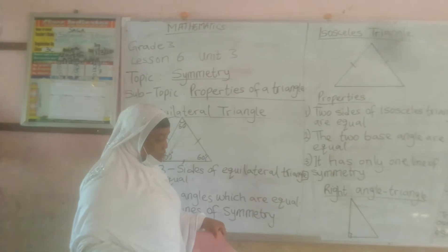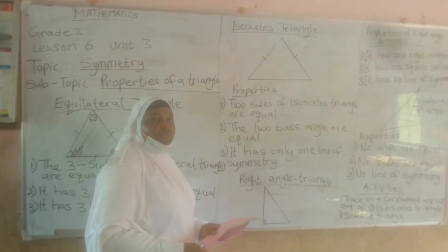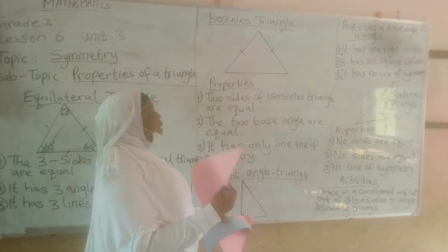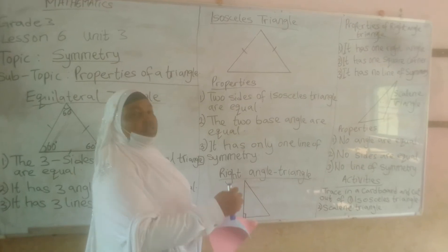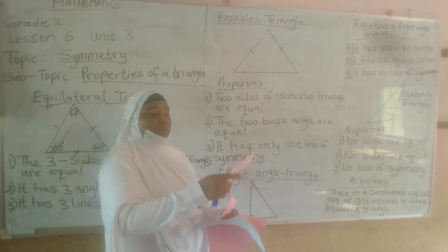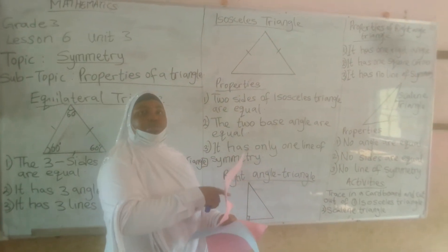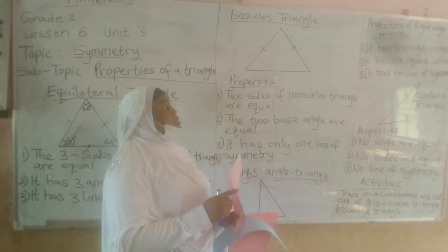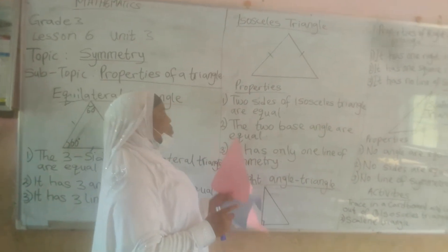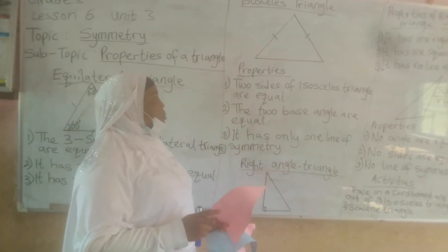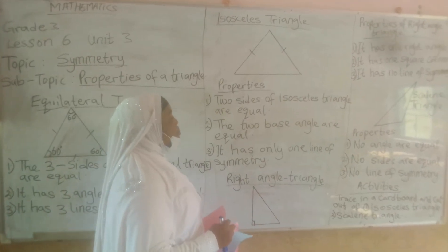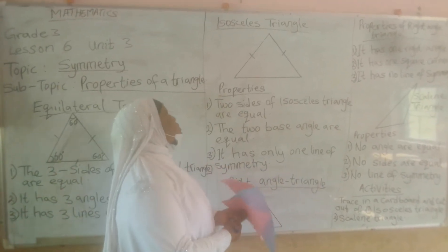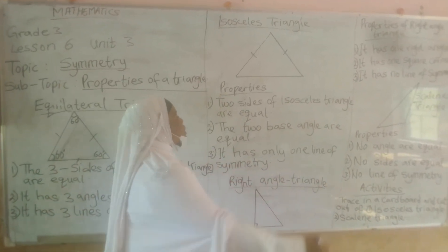Then we have what we call an isosceles triangle. An isosceles triangle is where two sides are equal: one, two — they are equal. The two sides of an isosceles triangle are equal. Then the two base angles are equal.